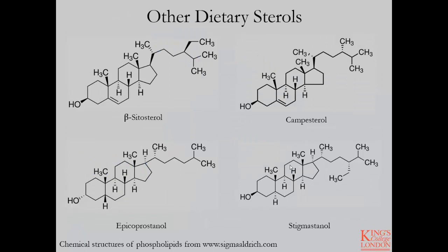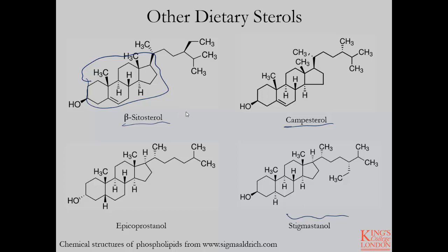Other dietarily important sterols are the plant sterols. Beta-sitosterol is a good example, as well as campesterol and stigmastanol. Each of these also has a conserved ring structure; however, our bodies do not use these in any biological process. We have evolved mechanisms in our gut to ensure that we do not absorb high amounts of these plant sterols. This actually plays into the biological effect of consuming high amounts of plant sterols — it tends to have a lowering effect on circulating cholesterol levels. The more plant sterols you consume, the more active the mechanism for expelling them from the gut, and you also get a loss of cholesterol, so net reabsorption of endogenous cholesterol in the gut becomes more negative, thereby increasing the need for the liver to remove cholesterol from circulation.